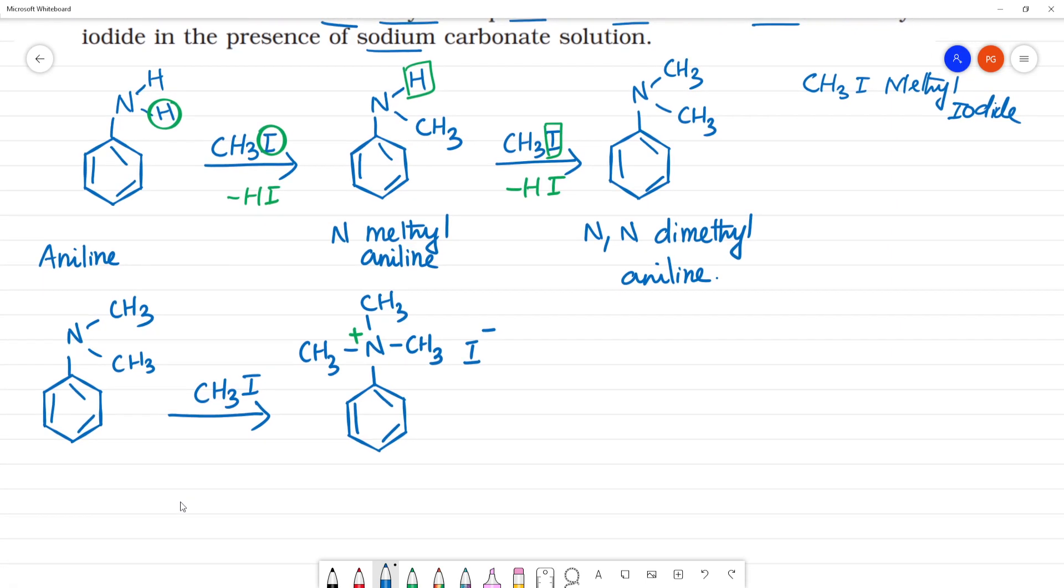This is a quaternary ammonium salt. So tertiary nitrogen has 3 carbon substituents. This is quaternary. So with excess of Na2CO3.